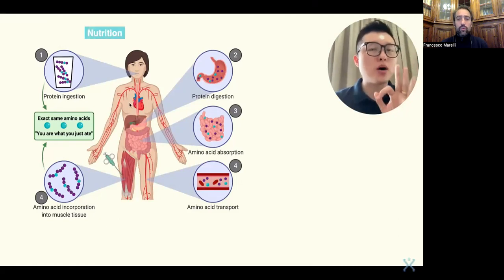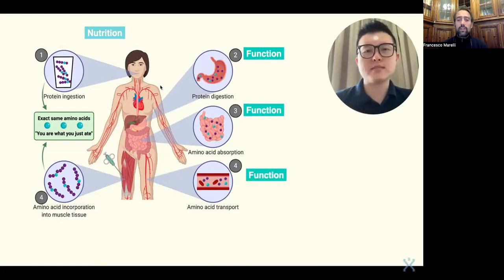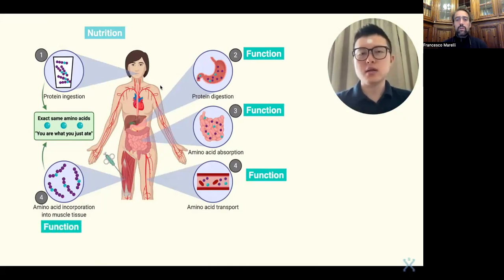So if you use the three pillars of health to analyze this diagram that you see, one, two, three, four. Number one is under nutrition. Number two is under organ function. Number three, organ function. Number four, again, organ function. Building muscle, organ function as well.